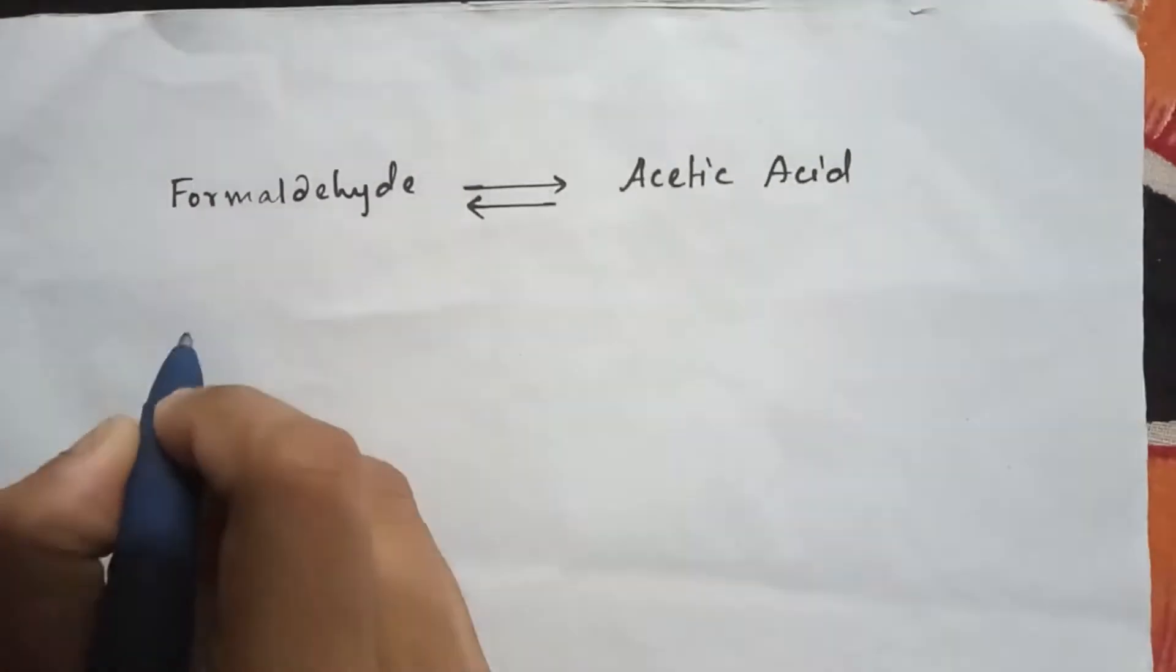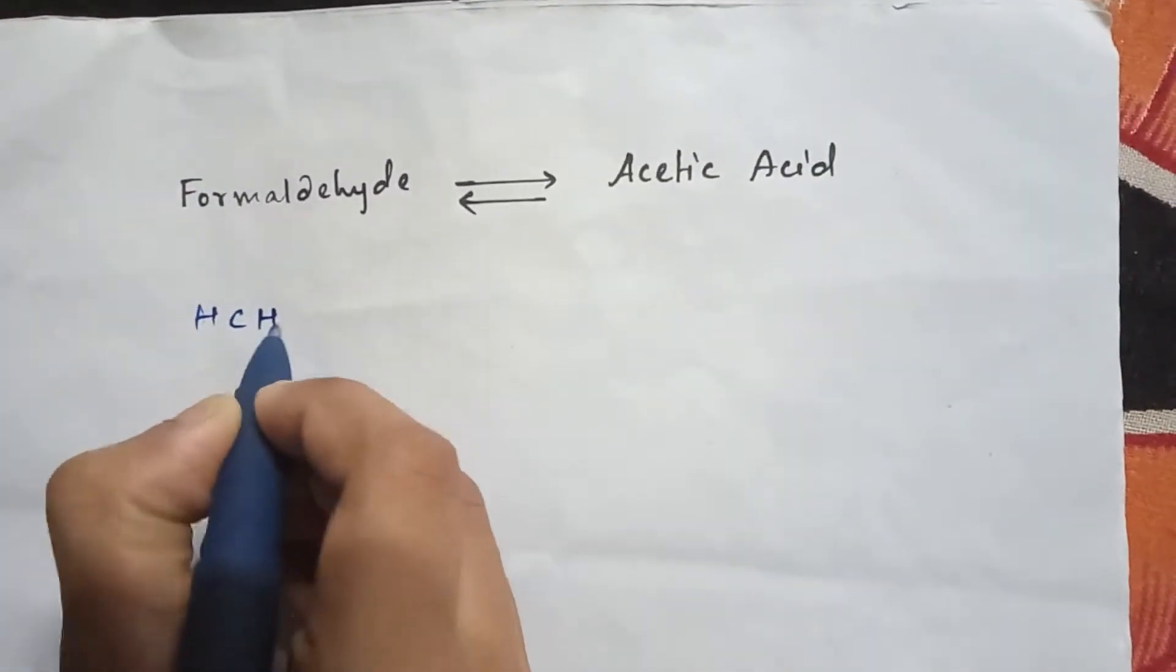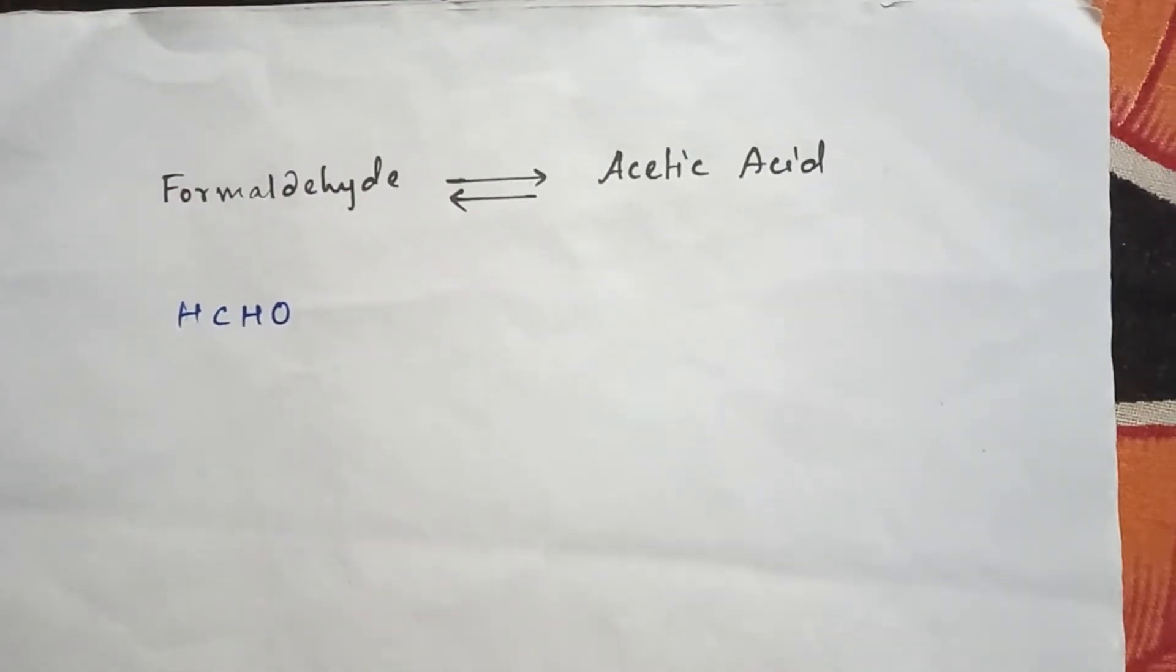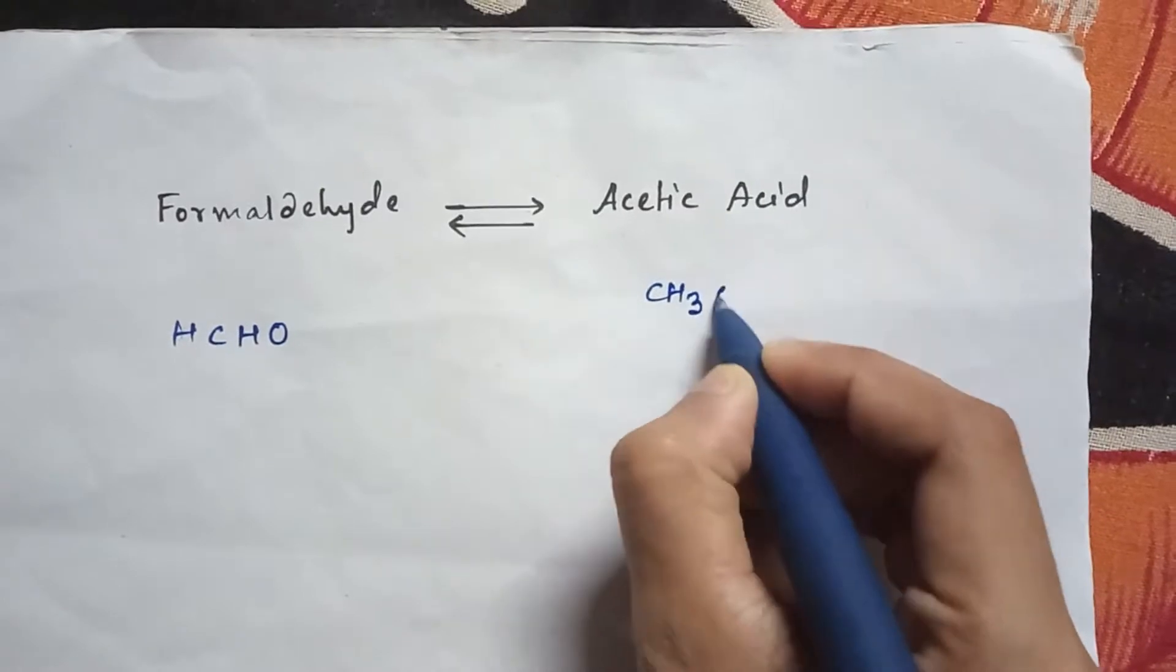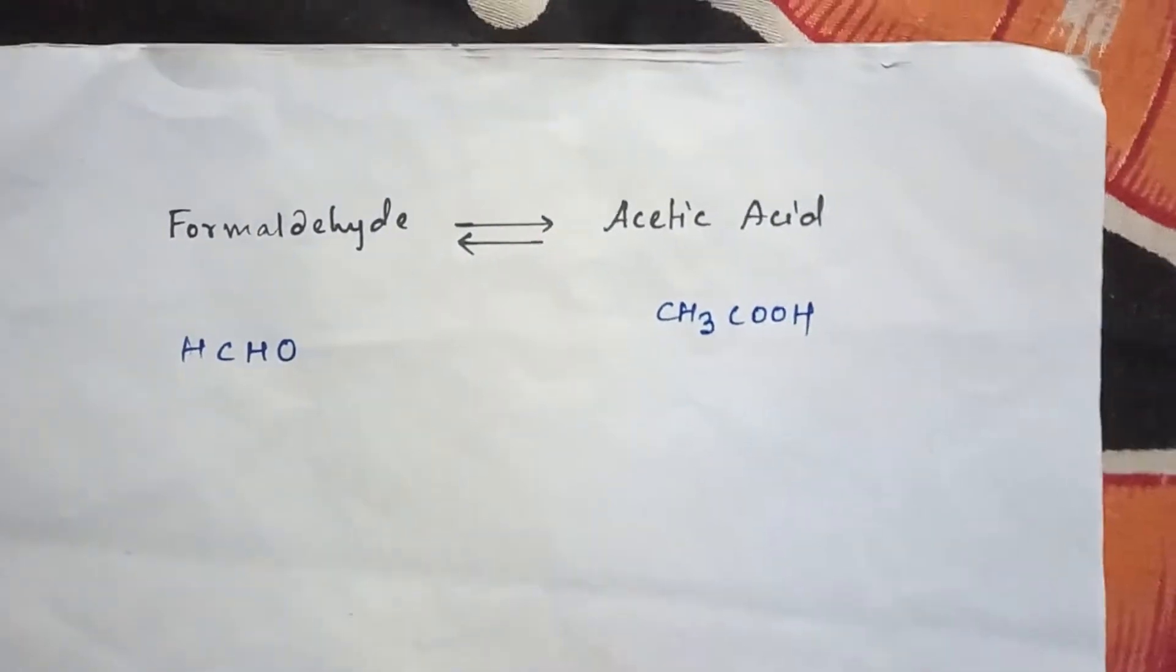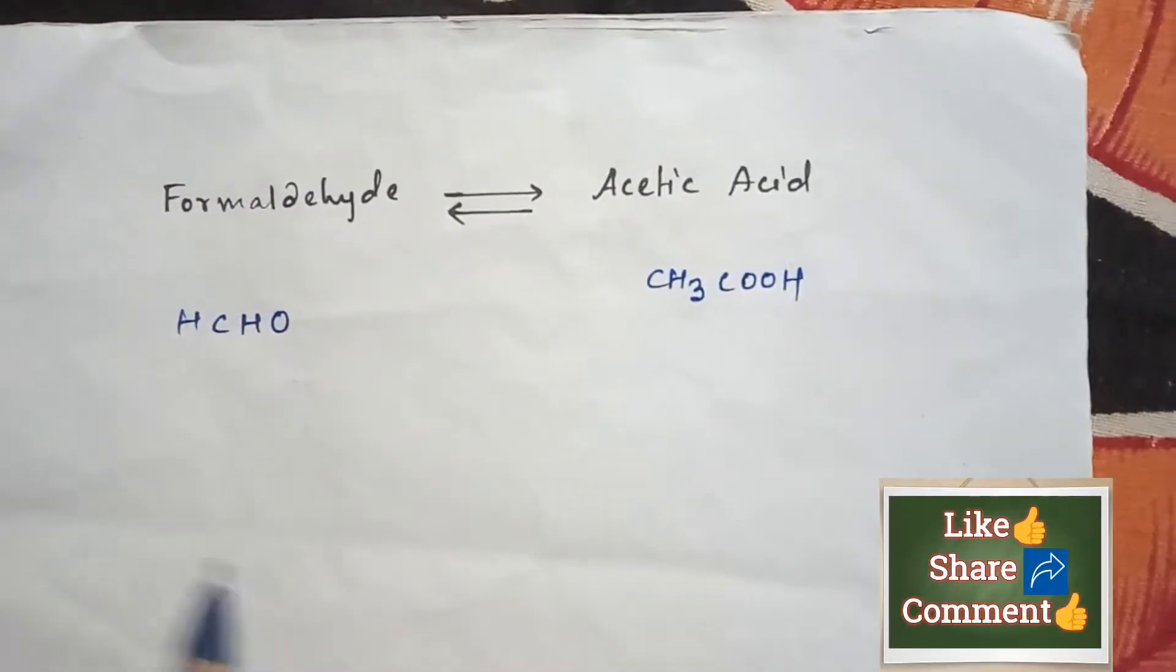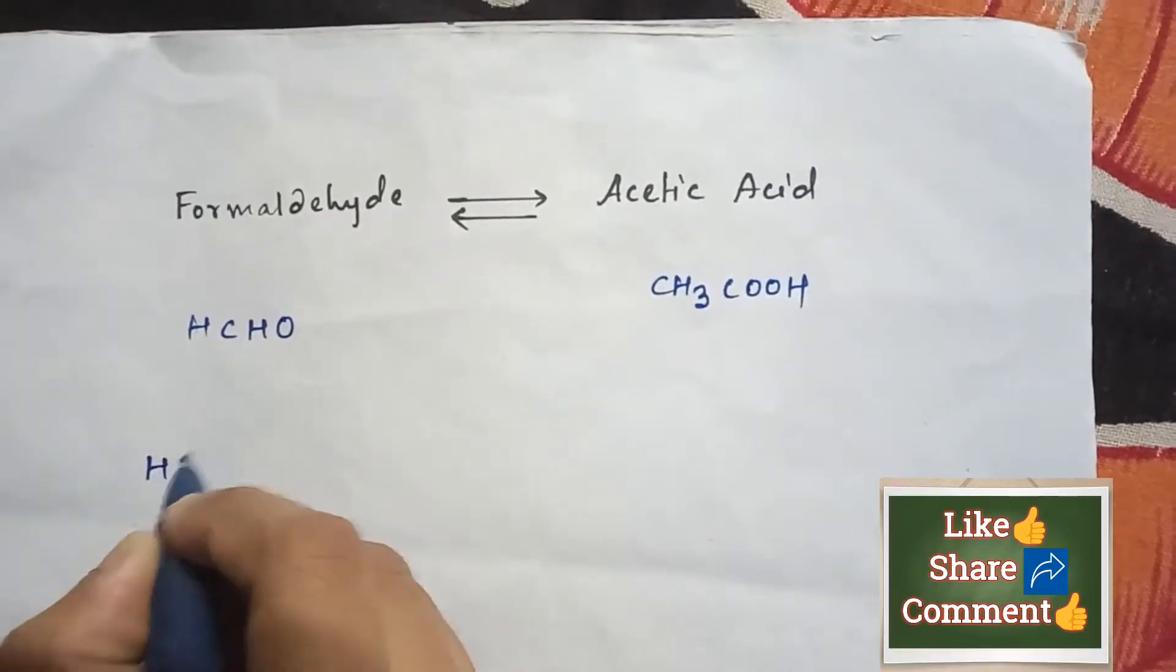First we will write the formula of formaldehyde: HCHO. And the acetic acid formula is CH3COOH. We can also write this formaldehyde formula like this way HCHO.